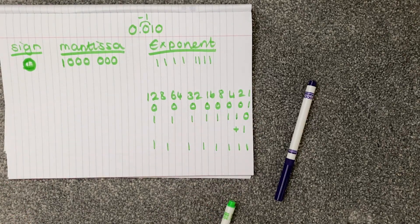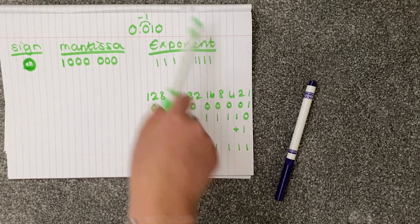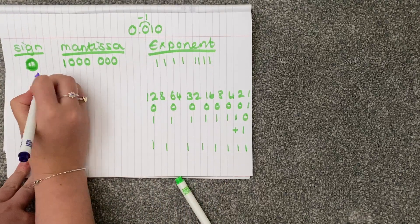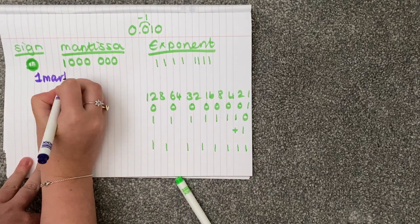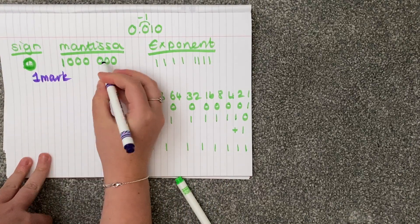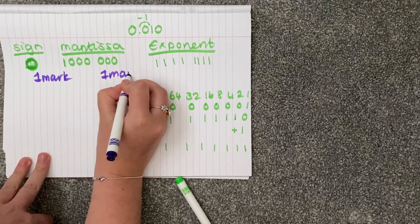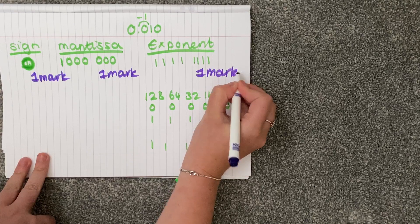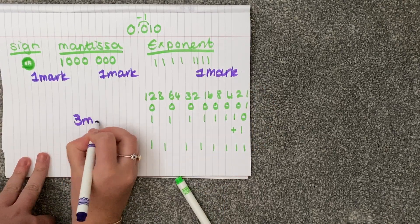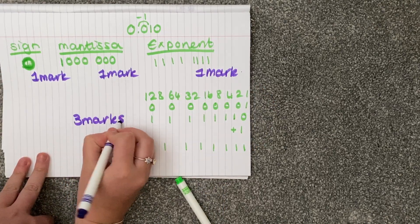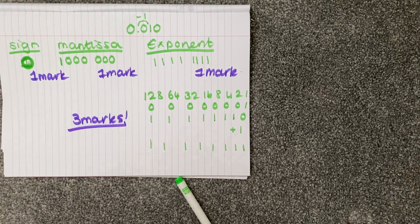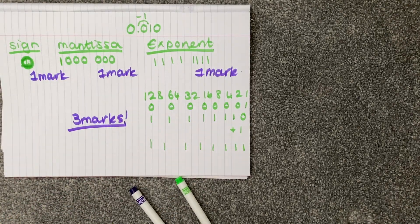So that's three examples. Hopefully we're quite happy with how to do our mantissa, exponent, and sign bit. This would actually be one mark, and this would be one mark, and this would be one mark in the exam. So this is a very good way to get three marks in your computing exam. This should be something we know how to do, and we can do so much practice with this — this is something you're confident with.